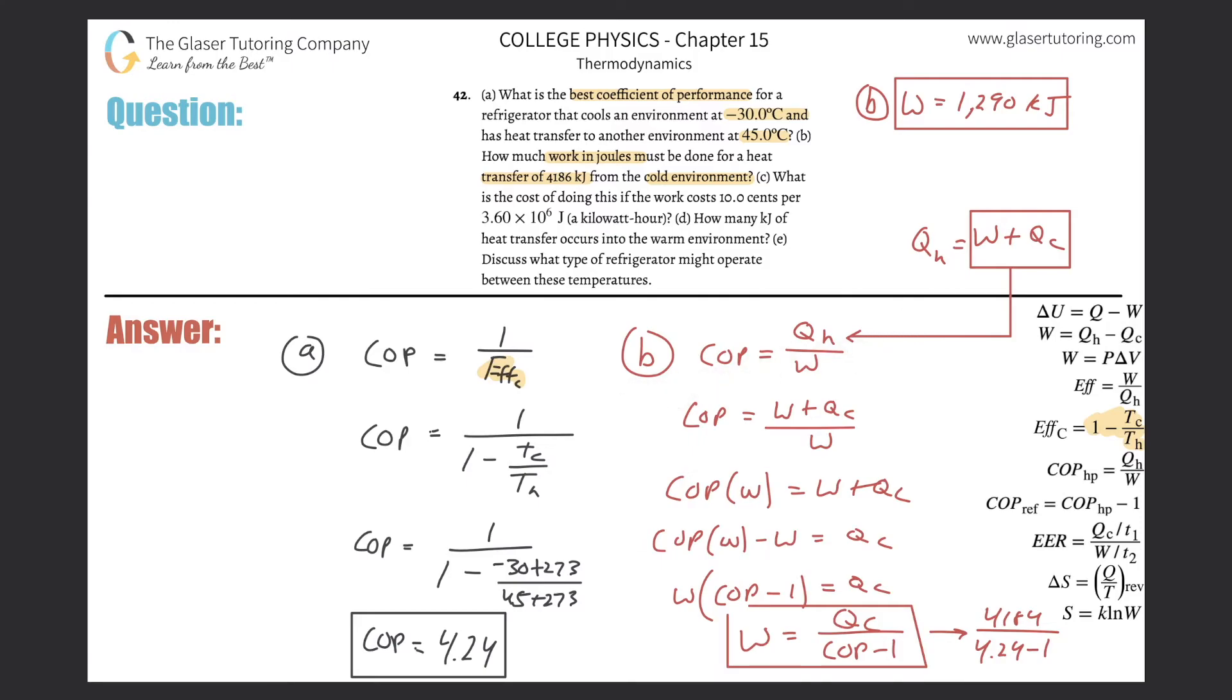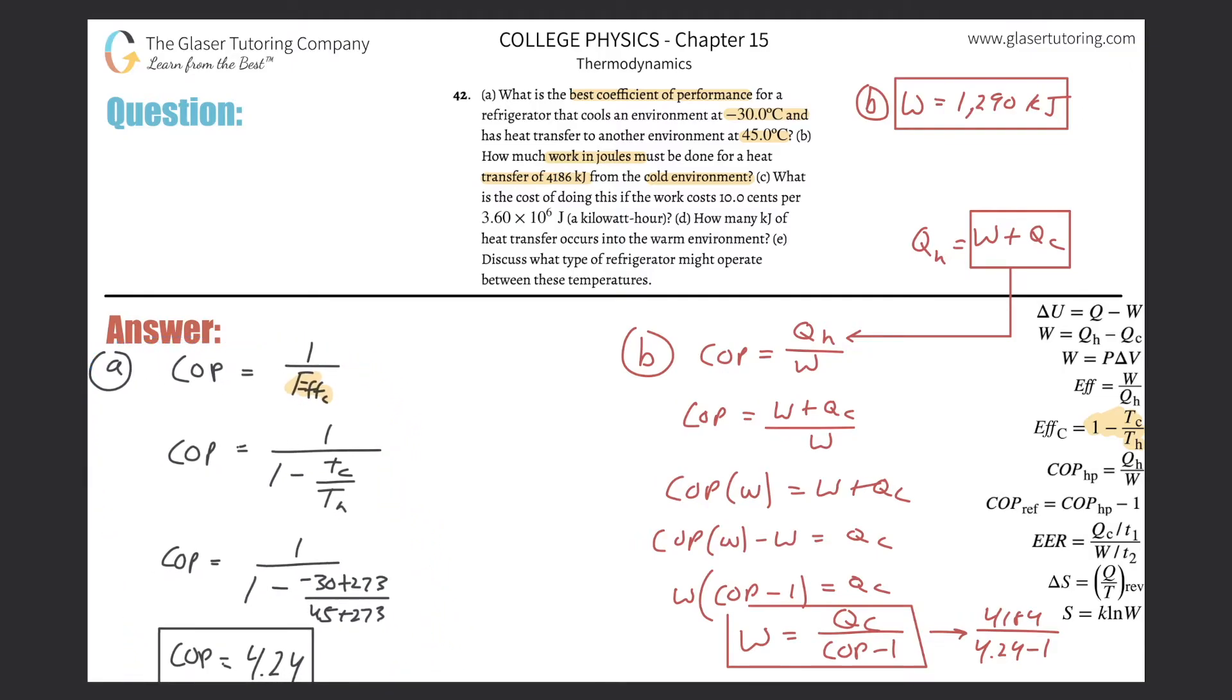Let's take a look now at letter C. What is the cost of doing this work? If doing this work that we just found costs 10 cents per this many joules? Well, that's fine. So they told us, or we calculated, the kilojoules of work. We can simply convert this into joules. I know that they're telling us a 10 cents per joule value. So just convert this quickly into joules. Since I don't have space here, I'm just going to do it basically in my head. You just multiply by 1000. So this would be 1,290,000 joules.